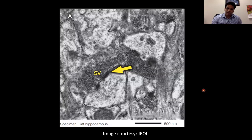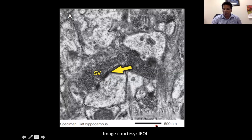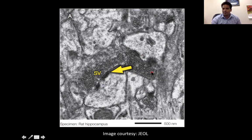This is one example — these are synaptic vesicles from a rat. You can see the scale bar is 500 nanometers, so we are at pretty high magnification. We are getting brilliant resolution because of the heavy metal staining used for this particular sample.